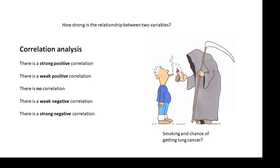Correlation analysis. Basically, how strong is the relationship between two variables? If I say that smoking increases the chances of getting lung cancer, is there a strong relationship? Is there a weak relationship? Is it a positive correlation? In other words, the more you smoke, the bigger the chances. Is there a negative correlation? The more you smoke, the smaller the chance. So you can have a strong positive or a weak positive. There could be no correlation. A weak negative or a strong negative.